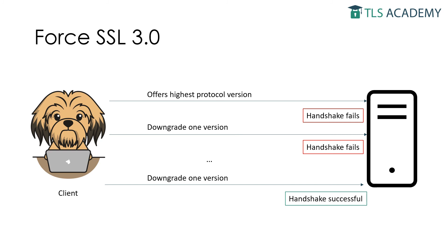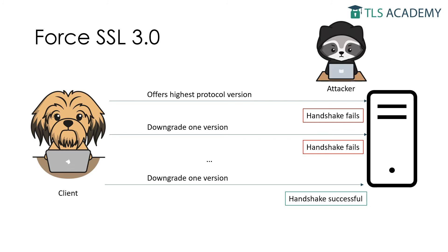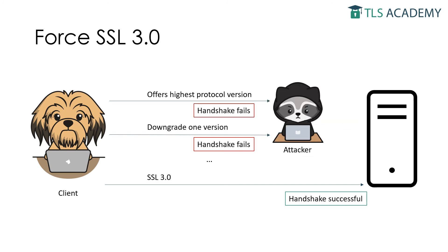Since this approach does not require the server to respond in any way, a downgrade of the protocol version can also be triggered by a network glitch or an attacker. The attacker can interfere with attempted handshakes until the client finally offers to use SSL 3.0.